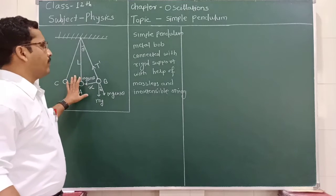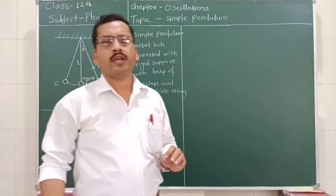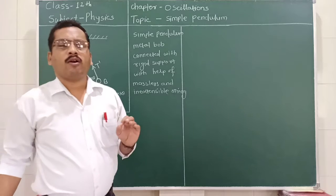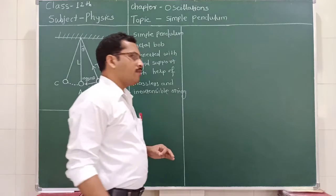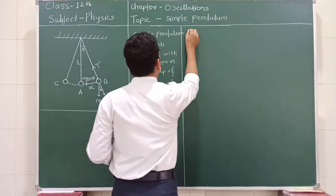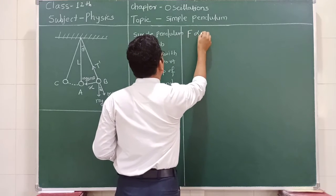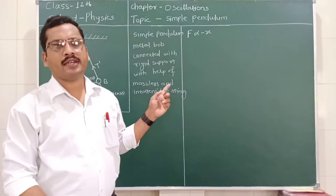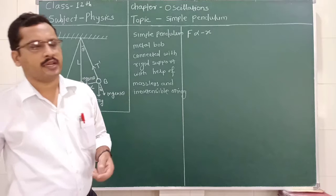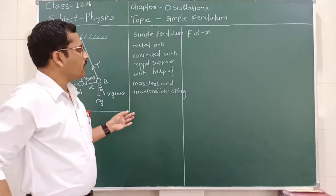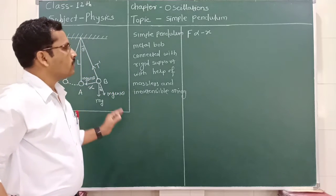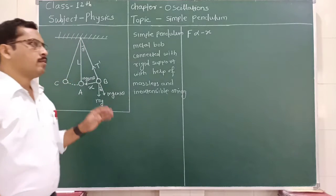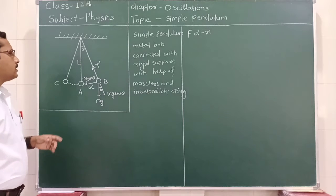We are going to show that the motion of the simple pendulum is simple harmonic motion. The property of simple harmonic motion is that if we have to show a body's motion is SHM, we need to show that the force F is directly proportional to the displacement, and the negative sign indicates that the force and displacement are oppositely directed. We need to derive the simple relation F ∝ −X.